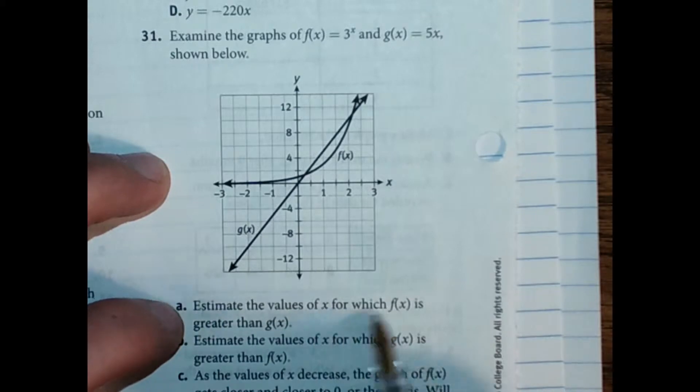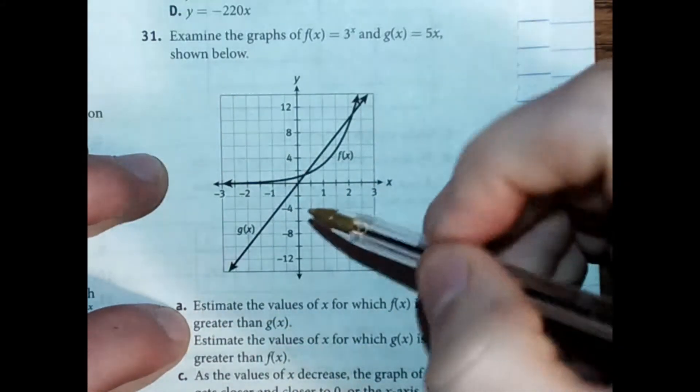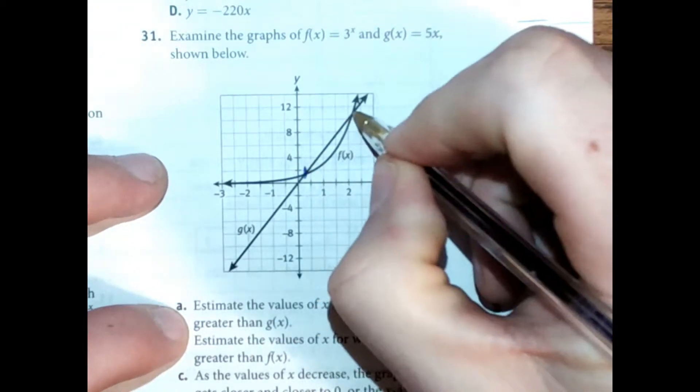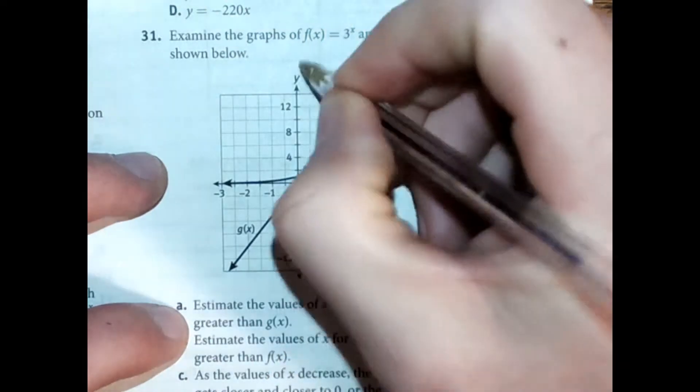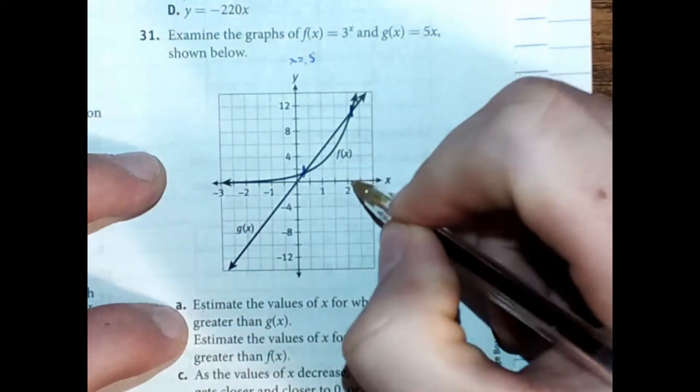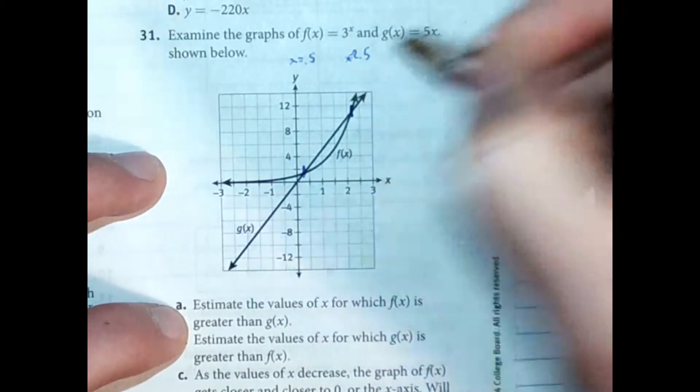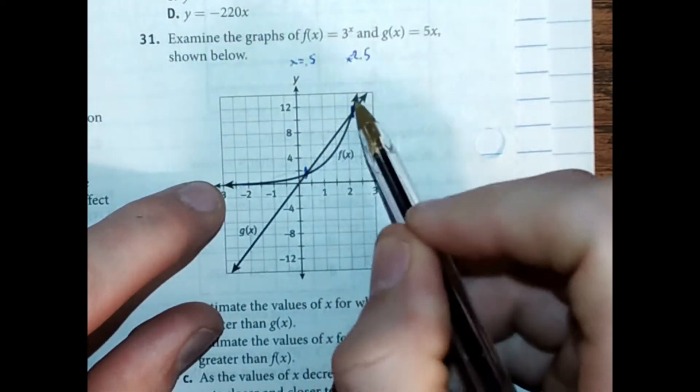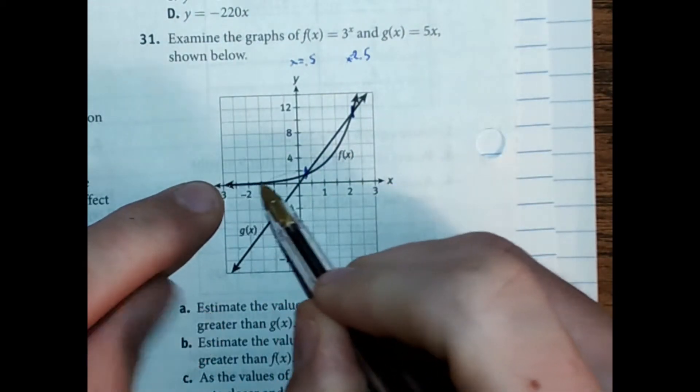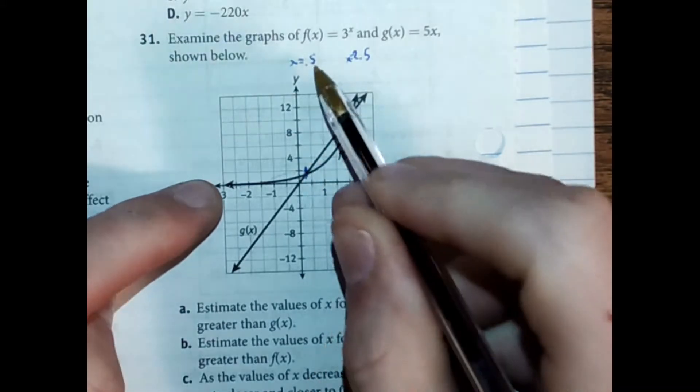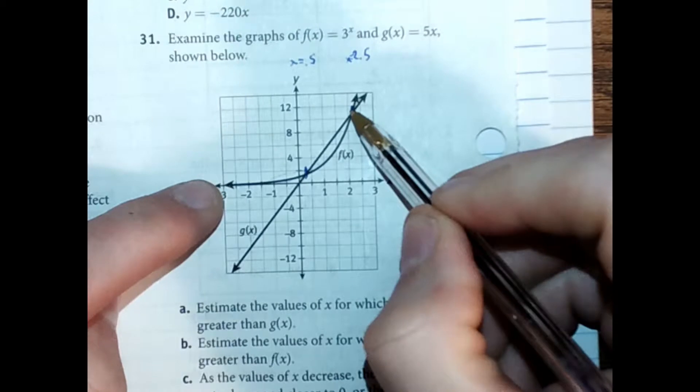And we're asked to estimate the values of x for which f of x is greater than g of x. So let's just make note of the intersection points here. And that looks like it's about x equal 0.5. And this one looks like it's about x equal 2.5. So if this right here, the exponential is f of x, we can see that f of x is above g of x until x equals 0.5, and then it's below g of x until x equals 2.5, and then it's above.